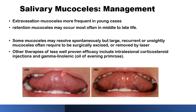Some of these mucoceles resolve spontaneously — they rupture and resolve on their own. Some would recur either in the same site or nearby. Most mucoceles require some form of treatment, either surgical removal or by lasers, or by other agents like sclerotherapy injection, intralesional injections of steroids, or topical application of medications on top of the cyst.